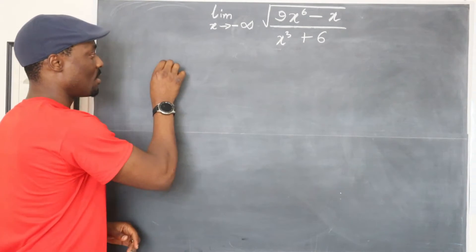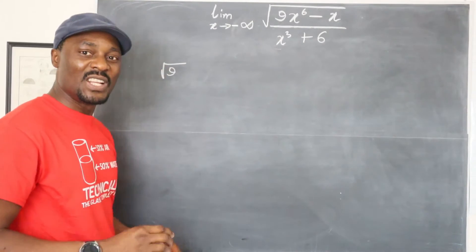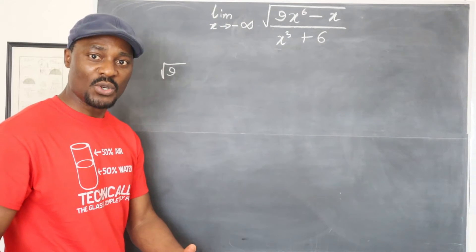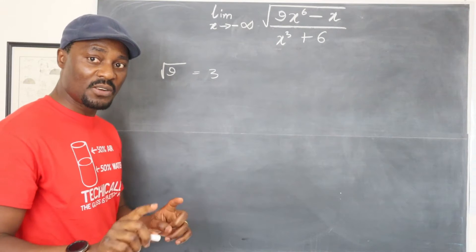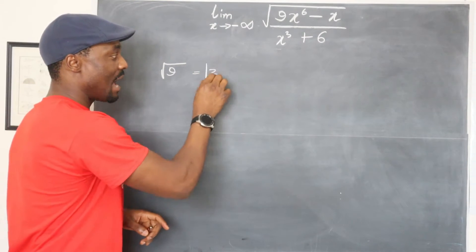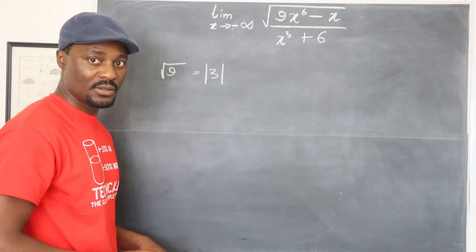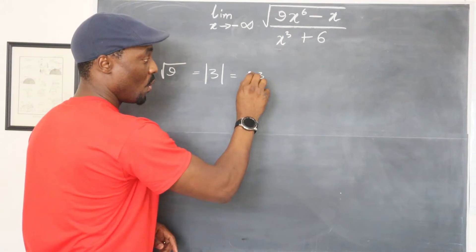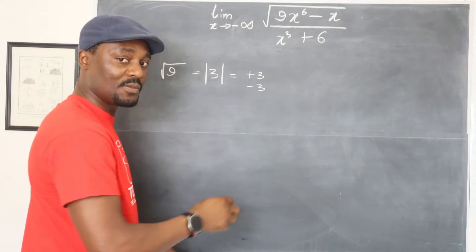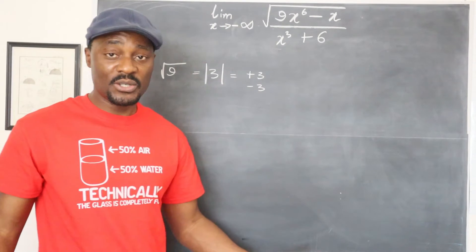So let's say you take the square root of nine. The natural thing for you to gravitate toward is that the answer is three, but let's not forget that the square root of nine is the absolute value of three, which means it is either positive three or negative three. It's either of these two depending on the situation you're in.